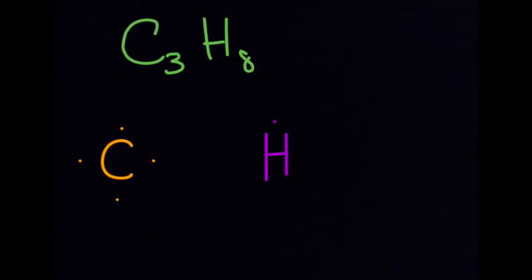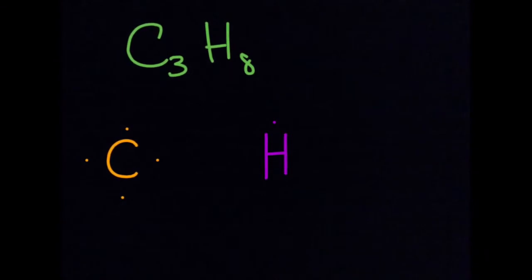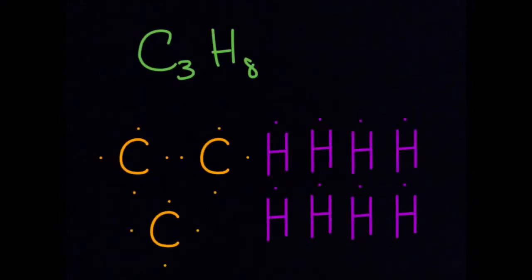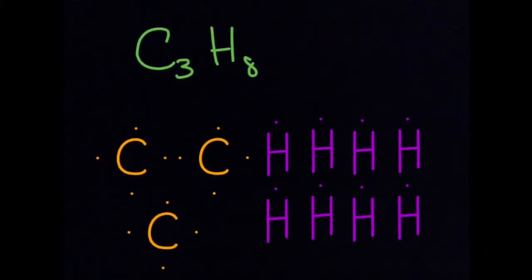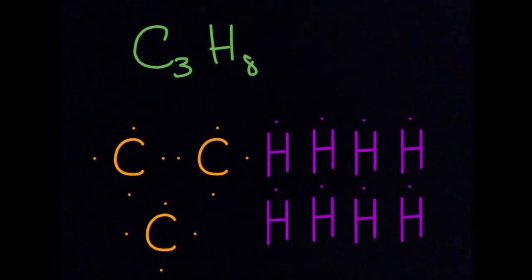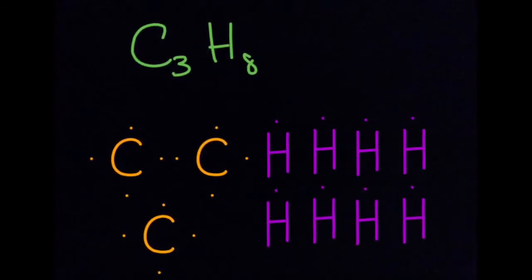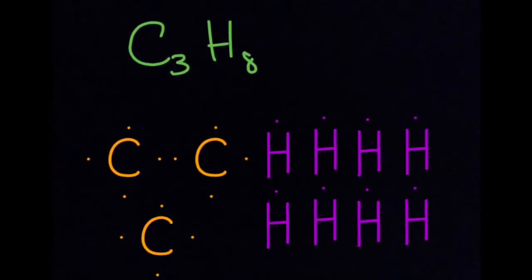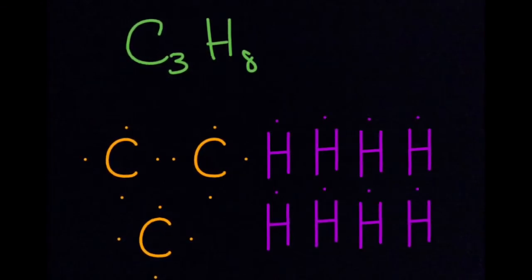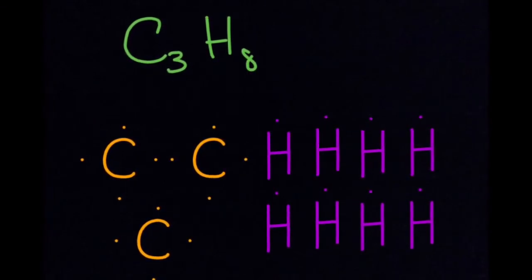If you look at your periodic table, you'll see that carbon has four valence electrons, and hydrogen only has one. C3H8 has a total of 20 valence electrons. Divide that by two, and you get ten. Subtract that by zero, which is the number of unshared pairs, and you're going to have a total of ten bonds by the end of this structure.